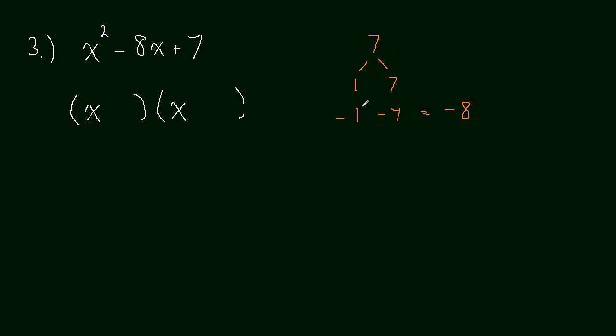And so that tells us that since these factors here, negative 1 and negative 7, multiply to positive 7, that's this guy, and then they add up to negative 8, that's this guy, we know that we have the right factors. So this is x minus 1 times x minus 7.